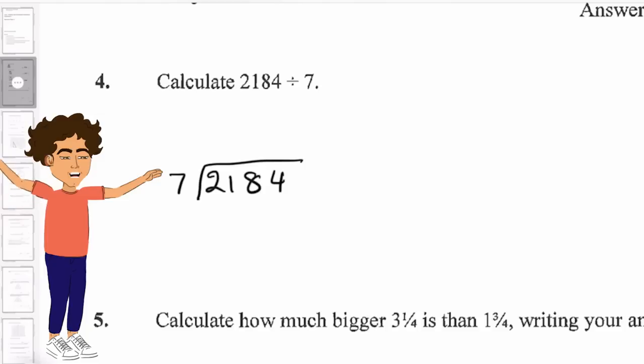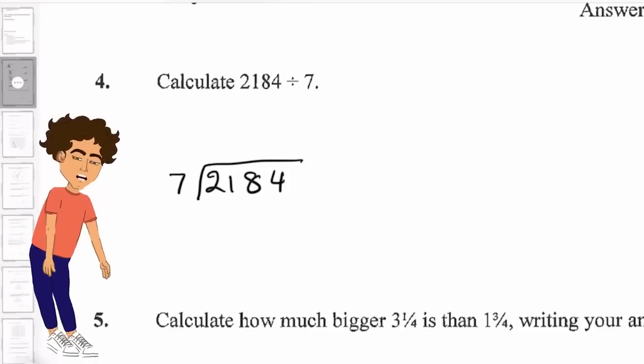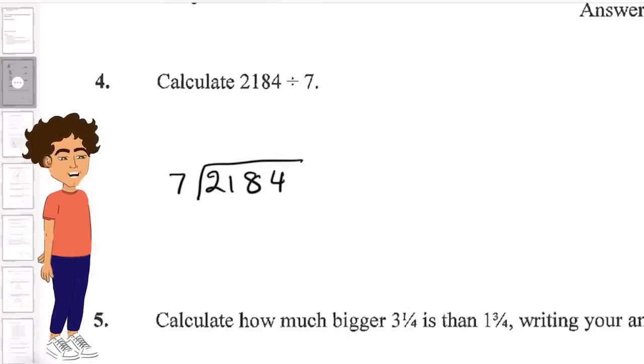If you're working with a fraction, the numerator would go under the bus stop. And now we need to find out how many times 7 goes into 2184. We know that 7 doesn't go into 2, but 7 does go into 21 three times.